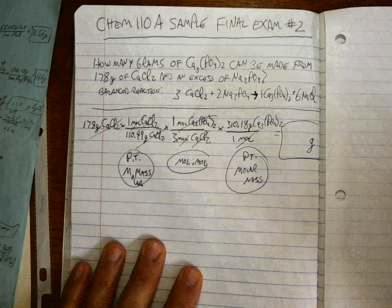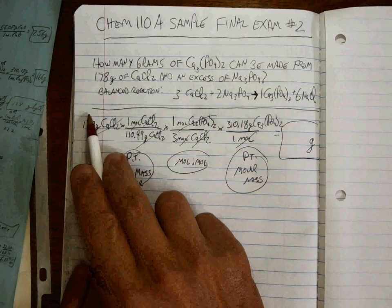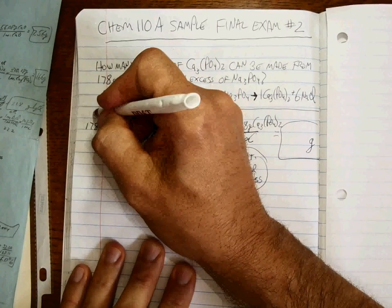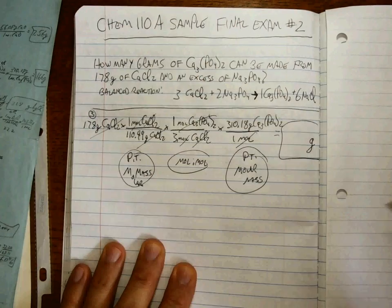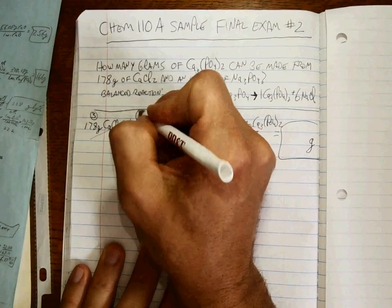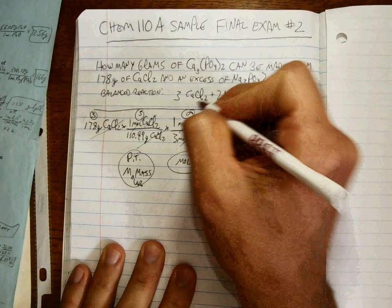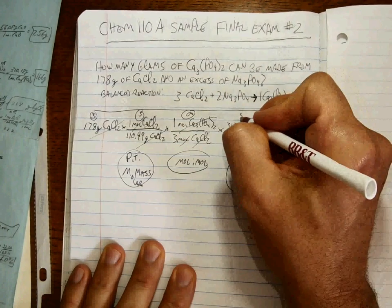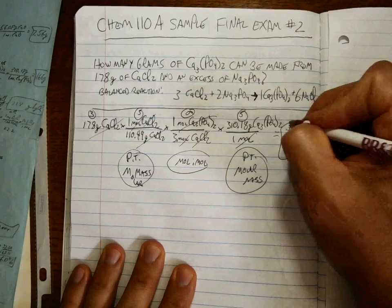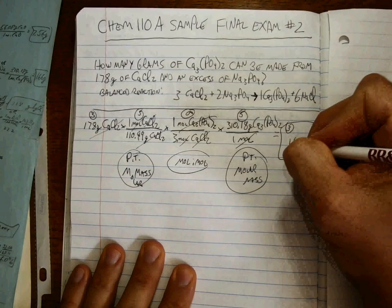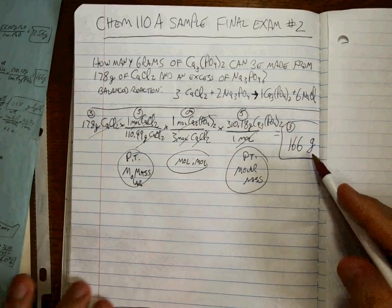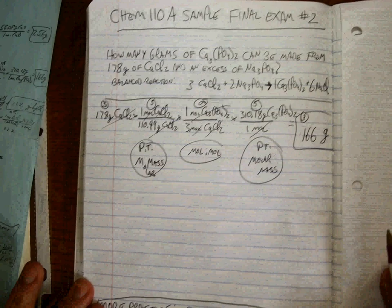How many sig figs in our answer? 3 here. 3 here. 5 here. 5 here. Infinite here. 5 here. So the answer will be 3. And I get 166 grams. 166 grams of the calcium phosphate.